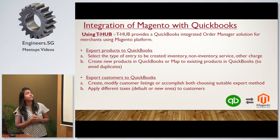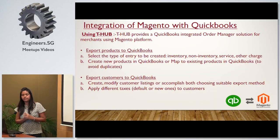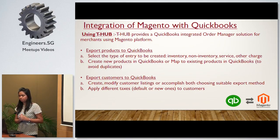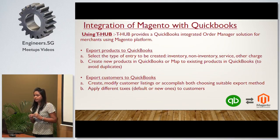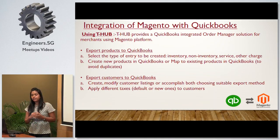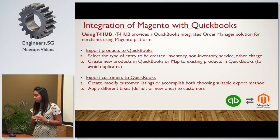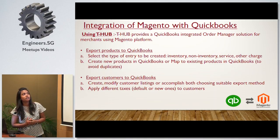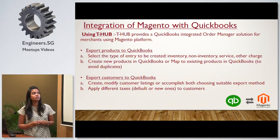How is it possible to integrate Magento with QuickBooks through T-Hub? T-Hub provides a QuickBooks-integrated order management solution for merchants using the Magento platform. Key points: you can export products to QuickBooks from Magento, select the type of entry to be created — like inventory, non-inventory, service, and other charges — and create new products in QuickBooks or map existing products in QuickBooks.